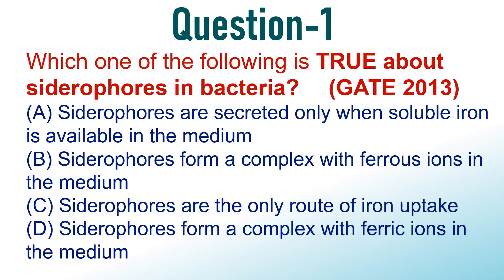Now let us go through a few questions. Which one of the following is true about Siderophores in bacteria? This is a GATE 2013 question. Option A: Siderophores are secreted only when soluble iron is available in the medium. Option B: Siderophores form a complex with ferrous ions in the medium. Option C: Siderophores are the only route of iron uptake. Option D: Siderophores form a complex with ferric ions in the medium. Choose the correct option.